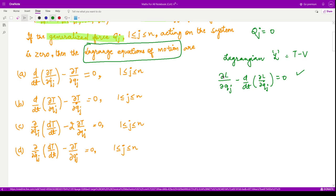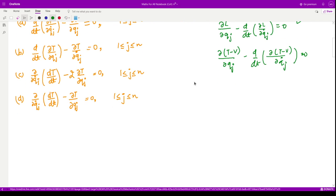In this system, if we replace L by T minus V, then we will get something like this. We can shift the terms containing V to the right-hand side.